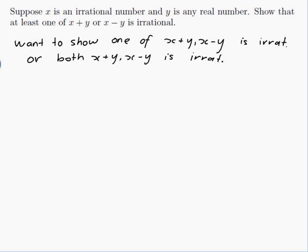From what I've seen before, most proofs that involve irrational numbers are proofs by contradiction. So I'm just going to remind myself about how proof by contradiction works.